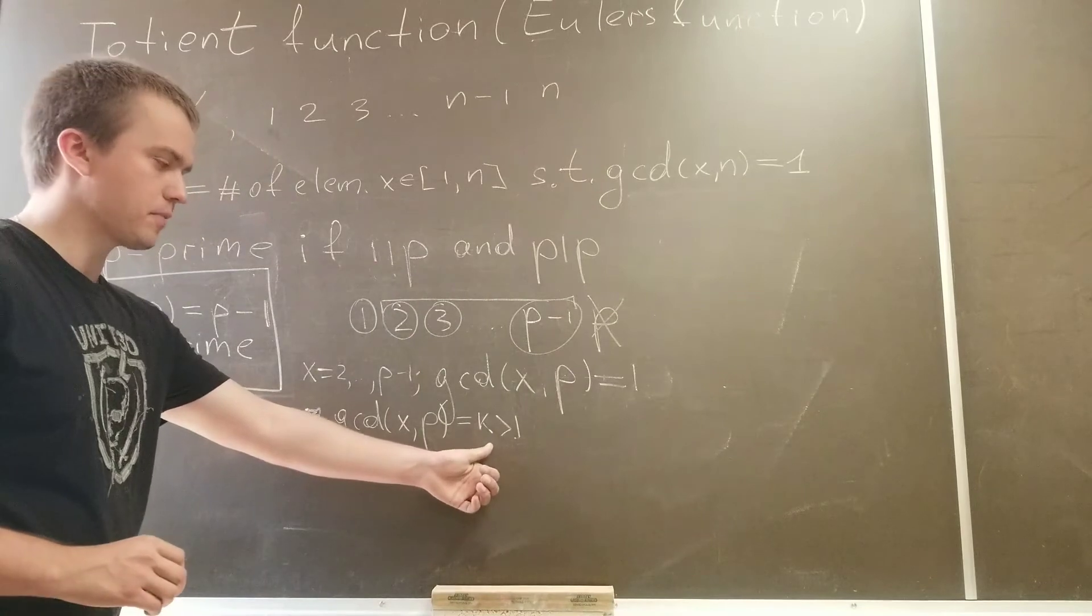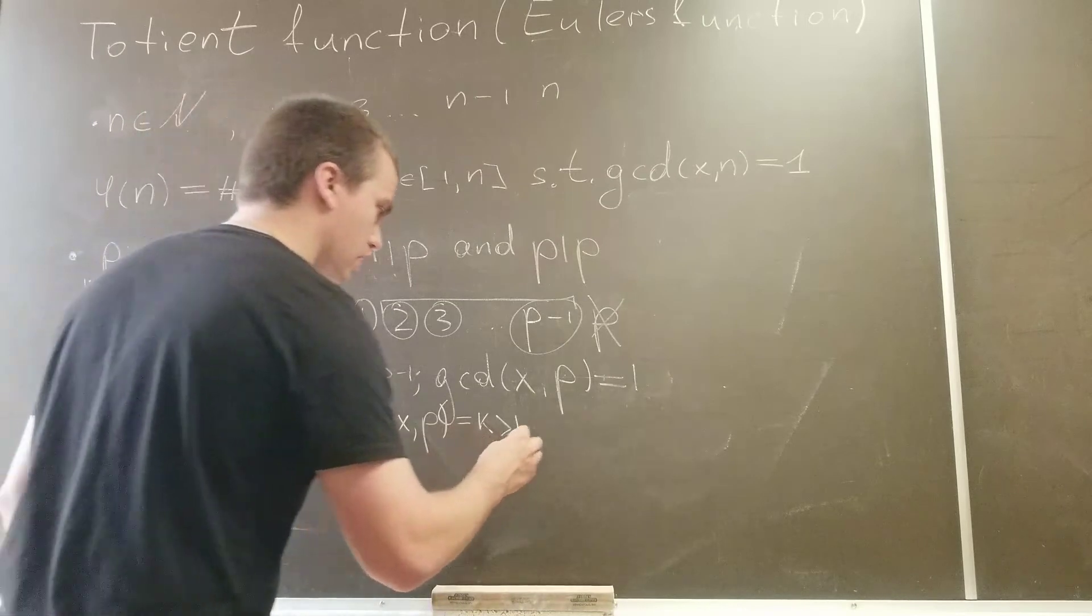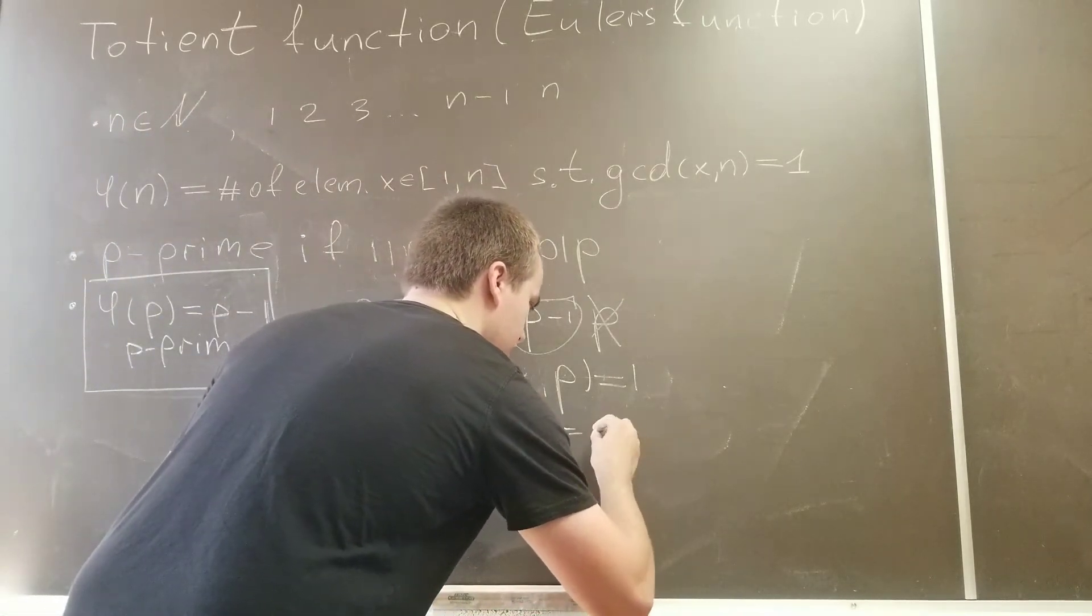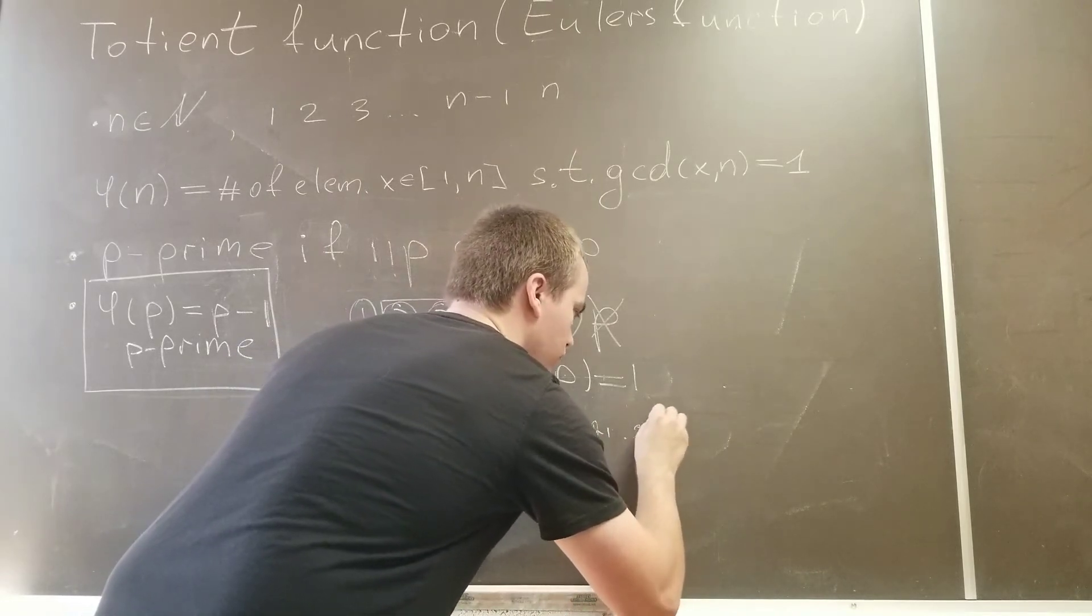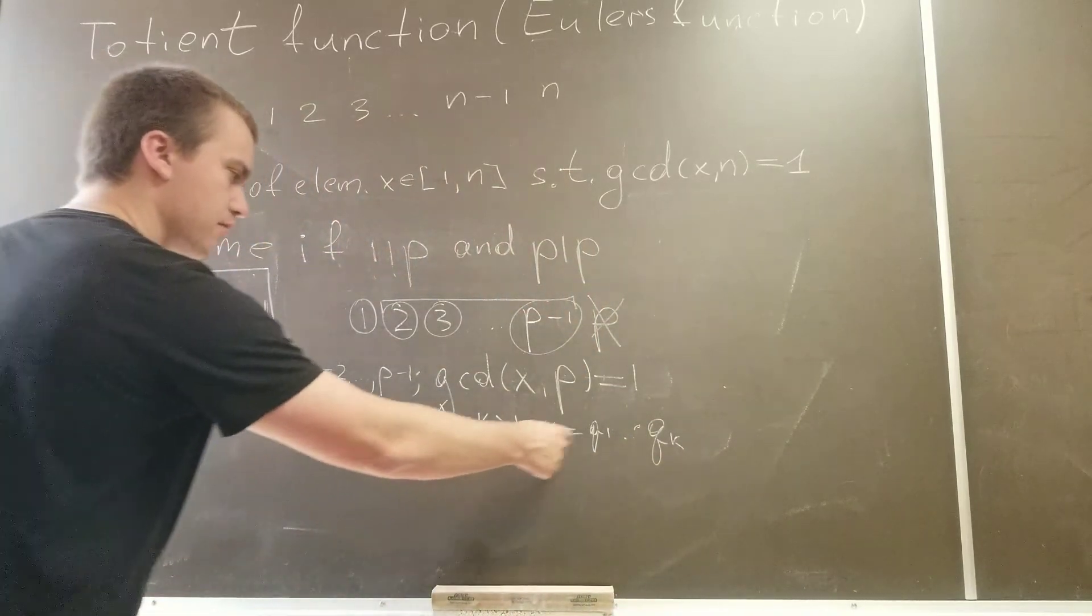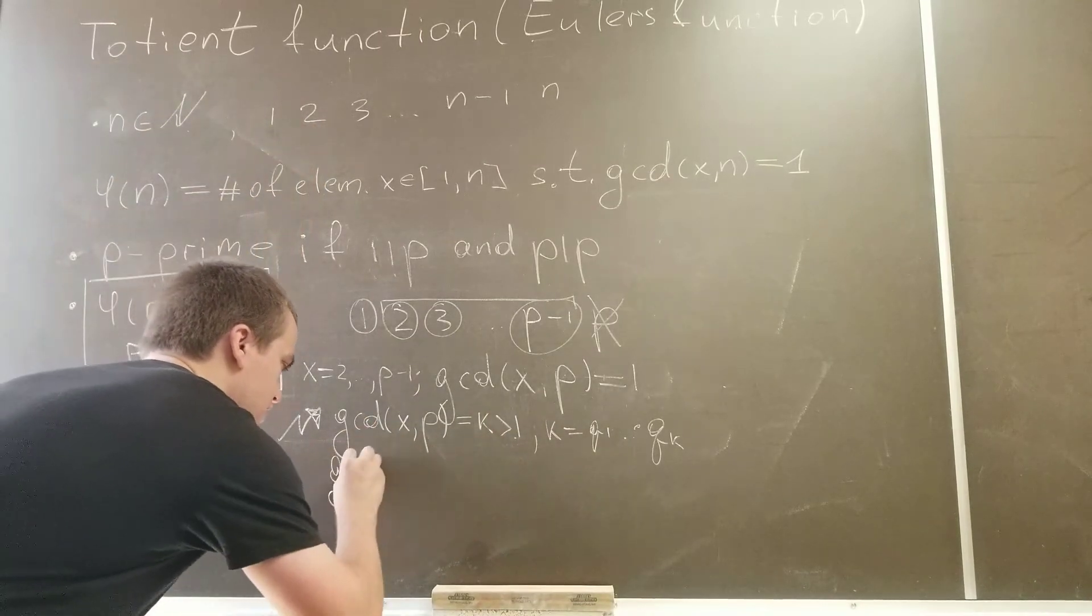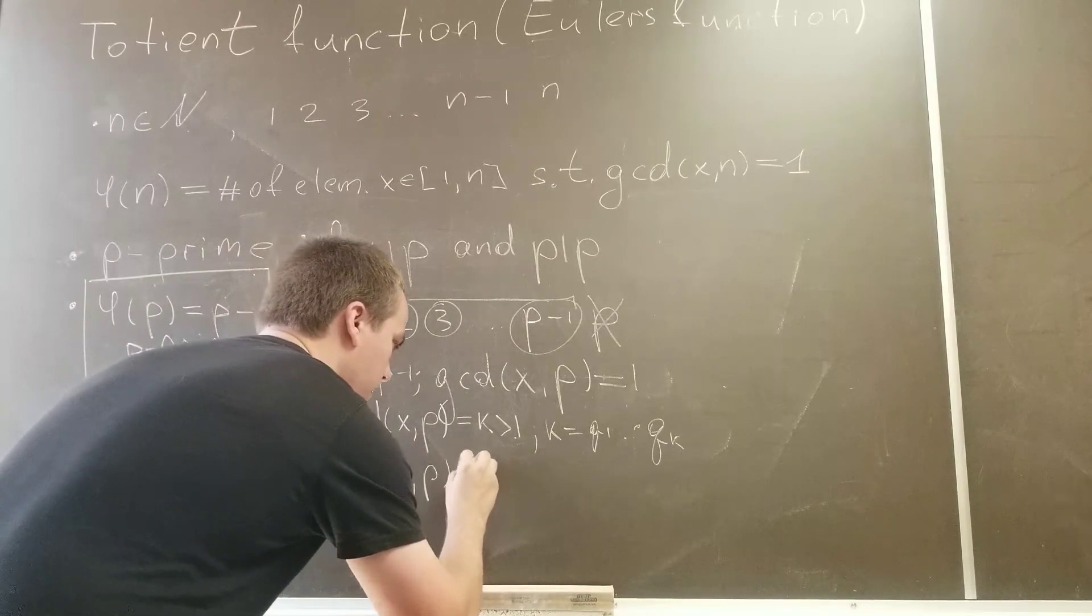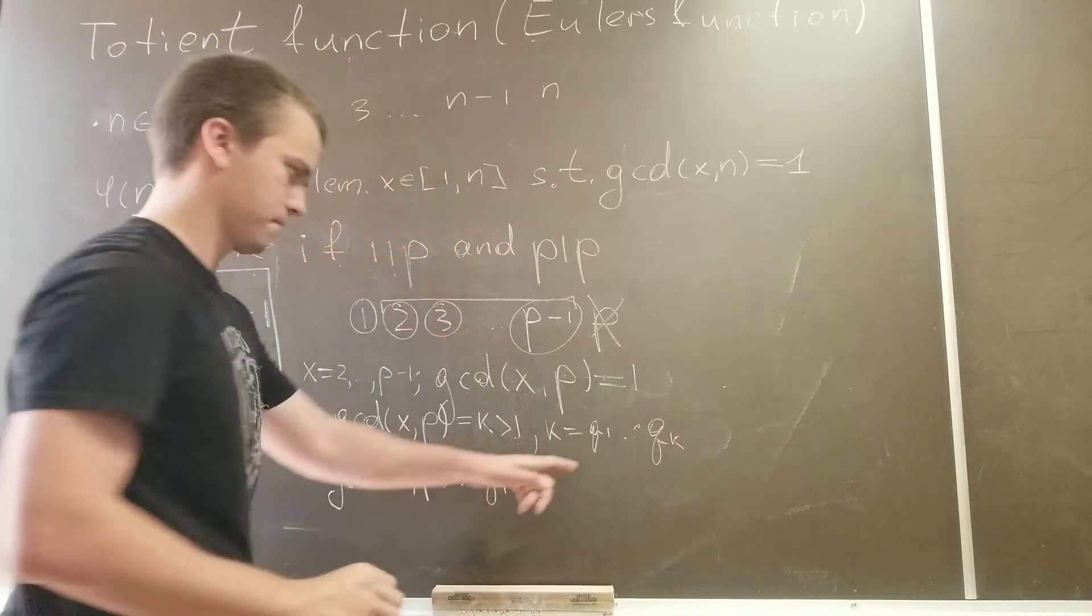But by unique prime factorization, we can say that this k equals the product of some primes, let's say q1 up to qk. So we can split our k into a product of prime numbers. And then from this, since k can be split into primes, we can say that gcd of x and p is bigger or equal than some, for example let's choose q1.